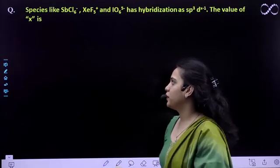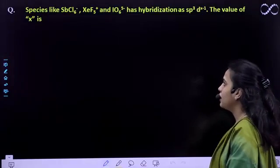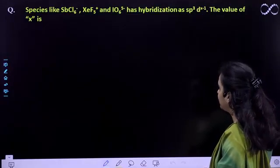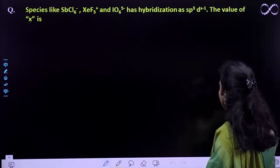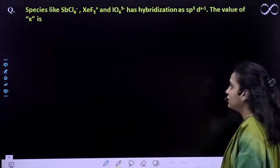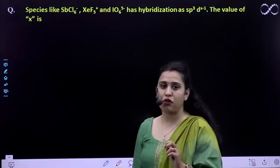Hello students, so in this question you are asked: species like SbCl6⁻, XeF5⁺, and IO6⁵⁻ have hybridization as sp³d^(x-1). The value of x is - so you have to find out the value of x.